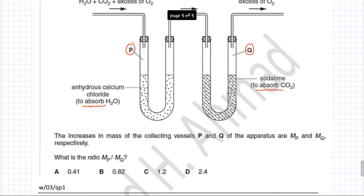The question reads that the increase in mass of the collecting vessels P and Q of the apparatus are MP and MQ respectively. What is the ratio of MP divided by MQ, which is the increase in mass? If you look carefully, this is absorbing H2O and this is absorbing CO2. So the increase in mass of P is because of the absorption of H2O and the increase in mass of Q is because of the absorption of CO2.